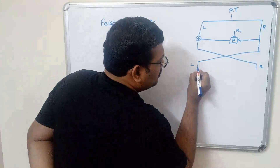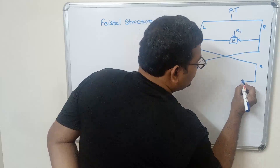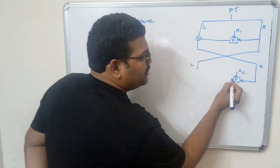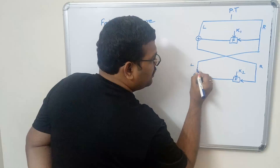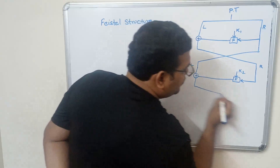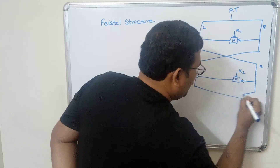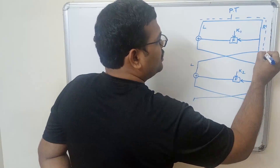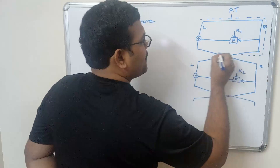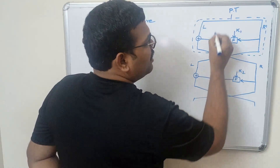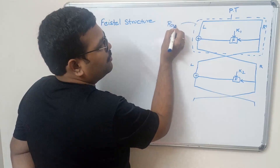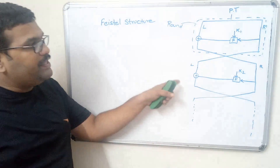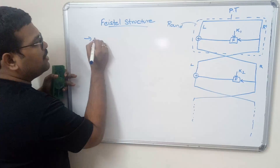Again the left half and right half — again the right half is applied to the function where sub-key 2 is used, and the result is XORed with the left half. The result will be saved in the right half, and the previous right half will be saved in the left half. We call this the round function. Likewise it keeps going, and this is called the Feistel structure.